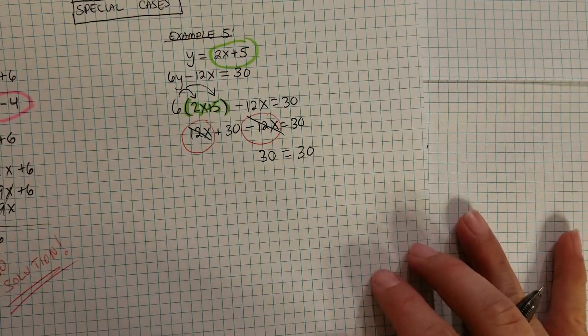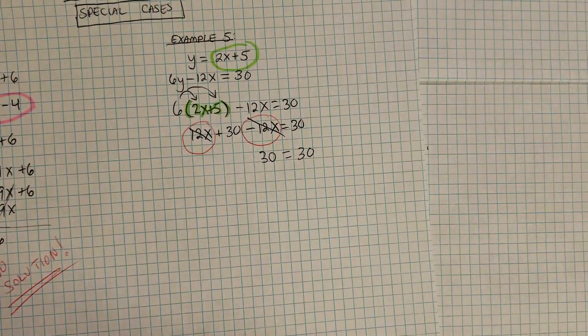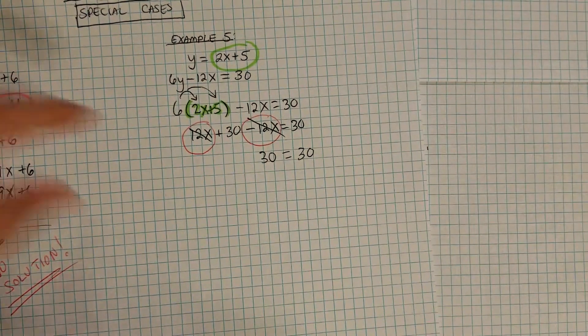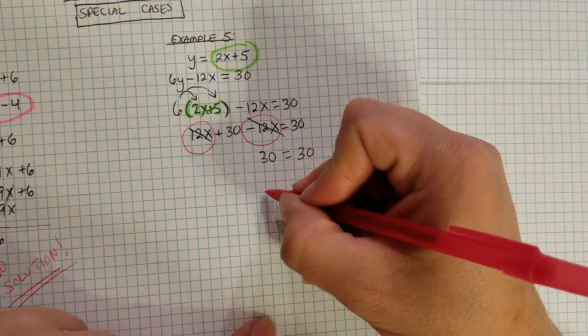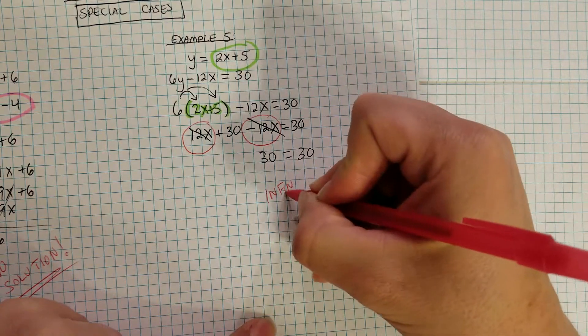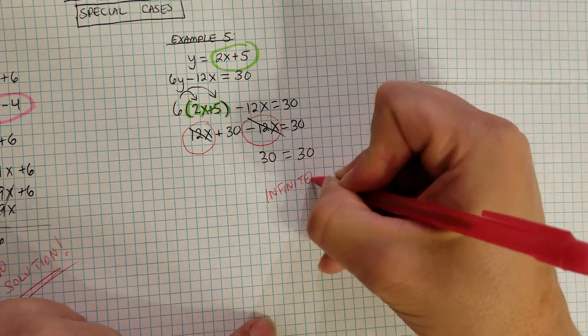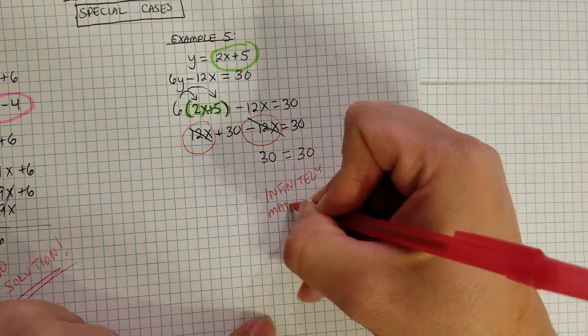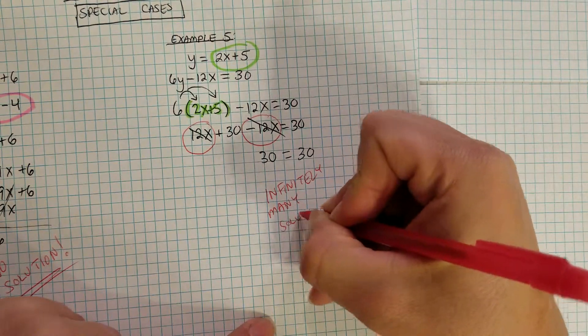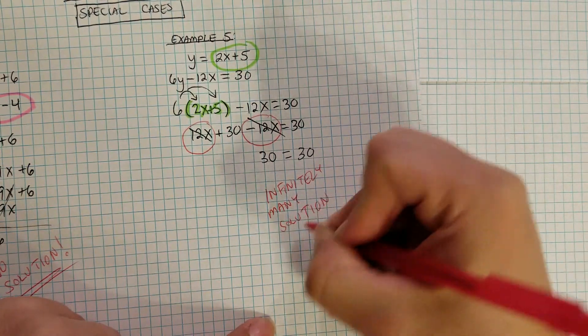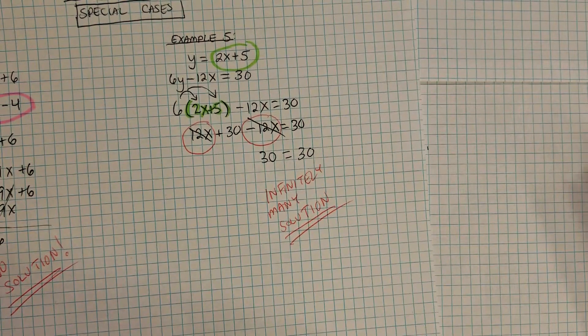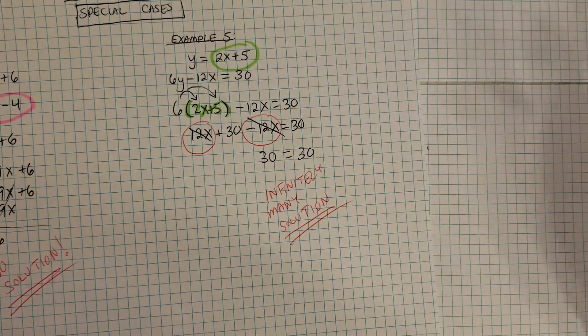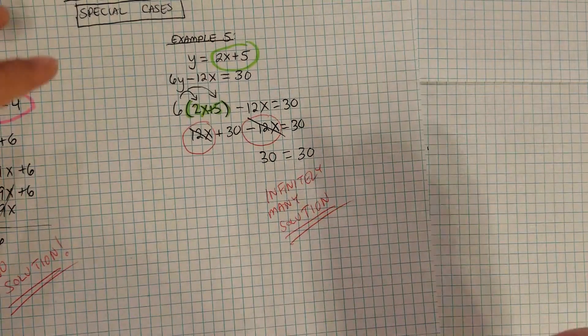This is actually true, and this will never not be true. This is always going to be true no matter what. 30 is equal to 30. That makes sense. So this is an example in which we have infinitely many solutions. Now all that means is it's the exact same line. How is that line not going to cross itself if it's the exact same line?